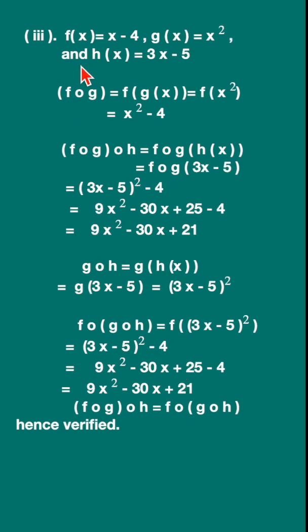Third sum also uses the same method. Here also the LHS will be 9x² - 30x + 21, and RHS is equal to 9x² - 30x + 21. Please go to the linked video.